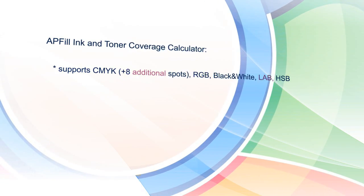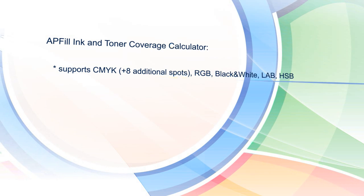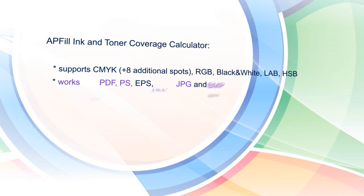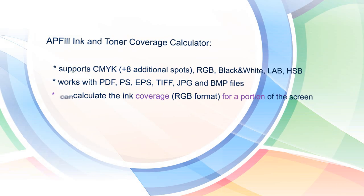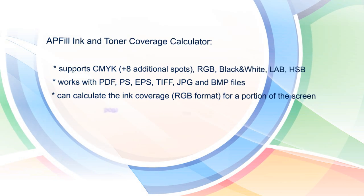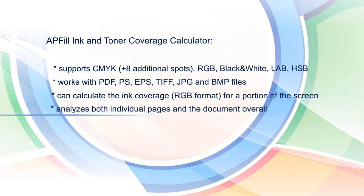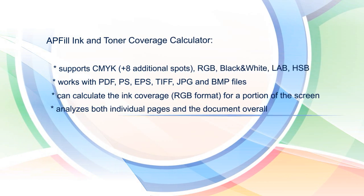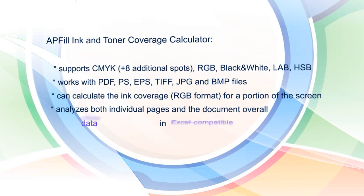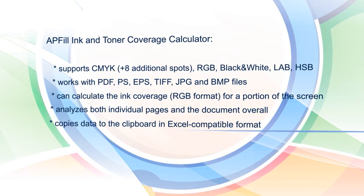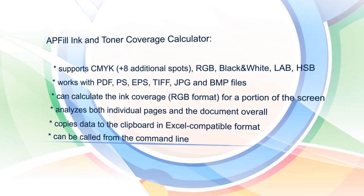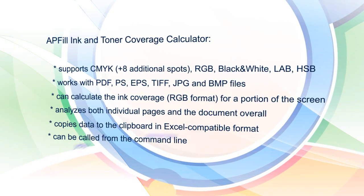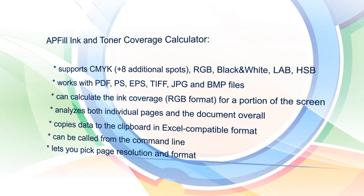With AP Fill, you can calculate ink coverage in all major and custom alternative color models. Work with files in a variety of formats. Measure the coverage for a portion of the screen. Calculate the coverage for both individual pages and the document overall. Copy data into Excel and other programs. Use the command line to start the ink coverage measurement process. Choose the print resolution and page format.